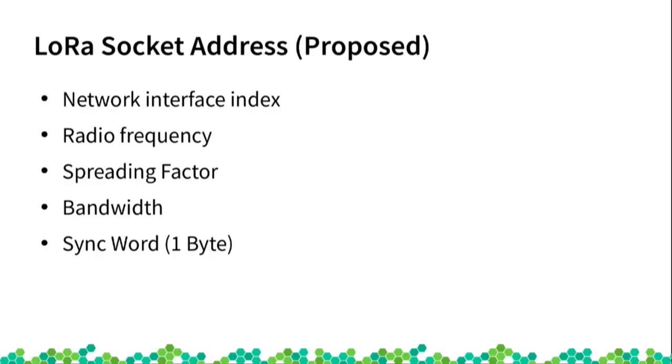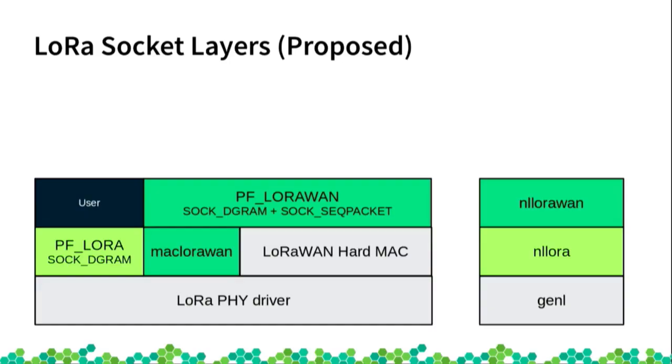The socket address for LoRa would include the frequency you are sending or receiving at, a so-called spreading factor that determines the exact shape of the radio signal, the bandwidth, and the mentioned sync word — which in LoRa is one byte. This list may not be entirely complete, but something like that would be the idea for a LoRa-specific socket address.